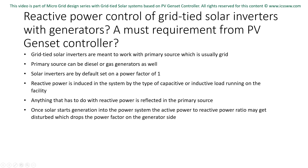Solar inverters are set to unity power factor by default. With a power factor of 1, the inverter does not generate or consume reactive power. Reactive power in a power system is the result of the nature of on-site capacitive or inductive loads. Consequently, everything related to reactive power is reflected on the generator. When solar energy begins generation in a power system, the ratio of active to reactive power can be disturbed, bringing down the power factor on the generator side.